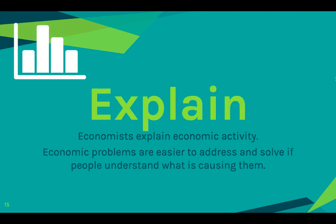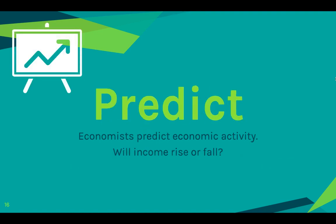Economists also explain economic activity. A lot of people don't quite understand the workings behind the economy because there's a lot there. Economic problems are easier to address and solve if people understand what is causing them, so economists are often the ones quoted in the news explaining what's happening. They also predict future economic activity — thinking about the past and bringing those trends into the current day to figure out what will happen. Lately, the prediction part has been very volatile, meaning changing very, very quickly, especially because of other factors affecting our economy currently.